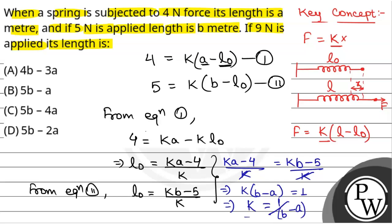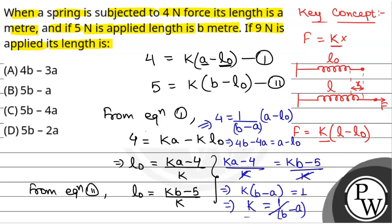Now putting the value of k into equation 1: 4 = k into (A minus L0), so 4 = [1/(B minus A)] into (A minus L0). Solving this, we get 4B minus 4A = A minus L0, and therefore L0 = 5A minus 4B.